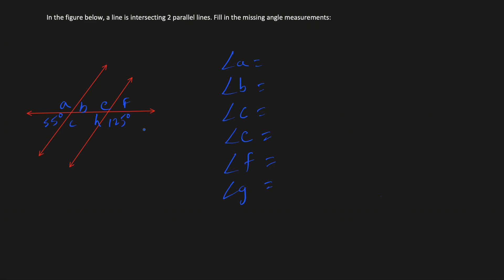Let's look at another figure. We have two parallel lines X and Y, and an intersecting line L. We are asked to find the measurement of each angle. Two angles are given: 55 degrees and 125 degrees. Using the vertical angle property — opposite angles are equal — if this angle is 55, then angle B is also 55. And if this angle is 125, then angle E is also 125 degrees.